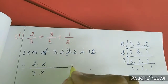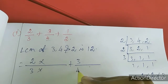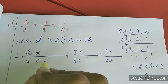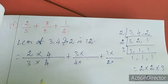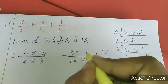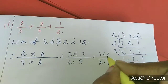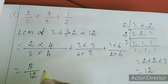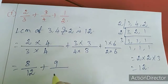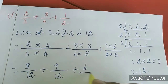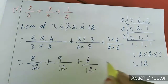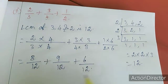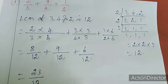The process is like this only. Second fraction, third fraction. 3 into which number gives 12? 4 — so up and down 4. 4 into which number gives 12? 3 — so up and down 3. 2 into which number gives 12? 6. Now I am multiplying: 2 fours are 8, 3 fours are 12. Plus 3 threes are 9, 4 threes are 12. Plus 1 six is 6, 2 sixes are 12. Now you have to add everything: 8 plus 9 is 17, 17 plus 6 is 23. So 23 divided by 12.